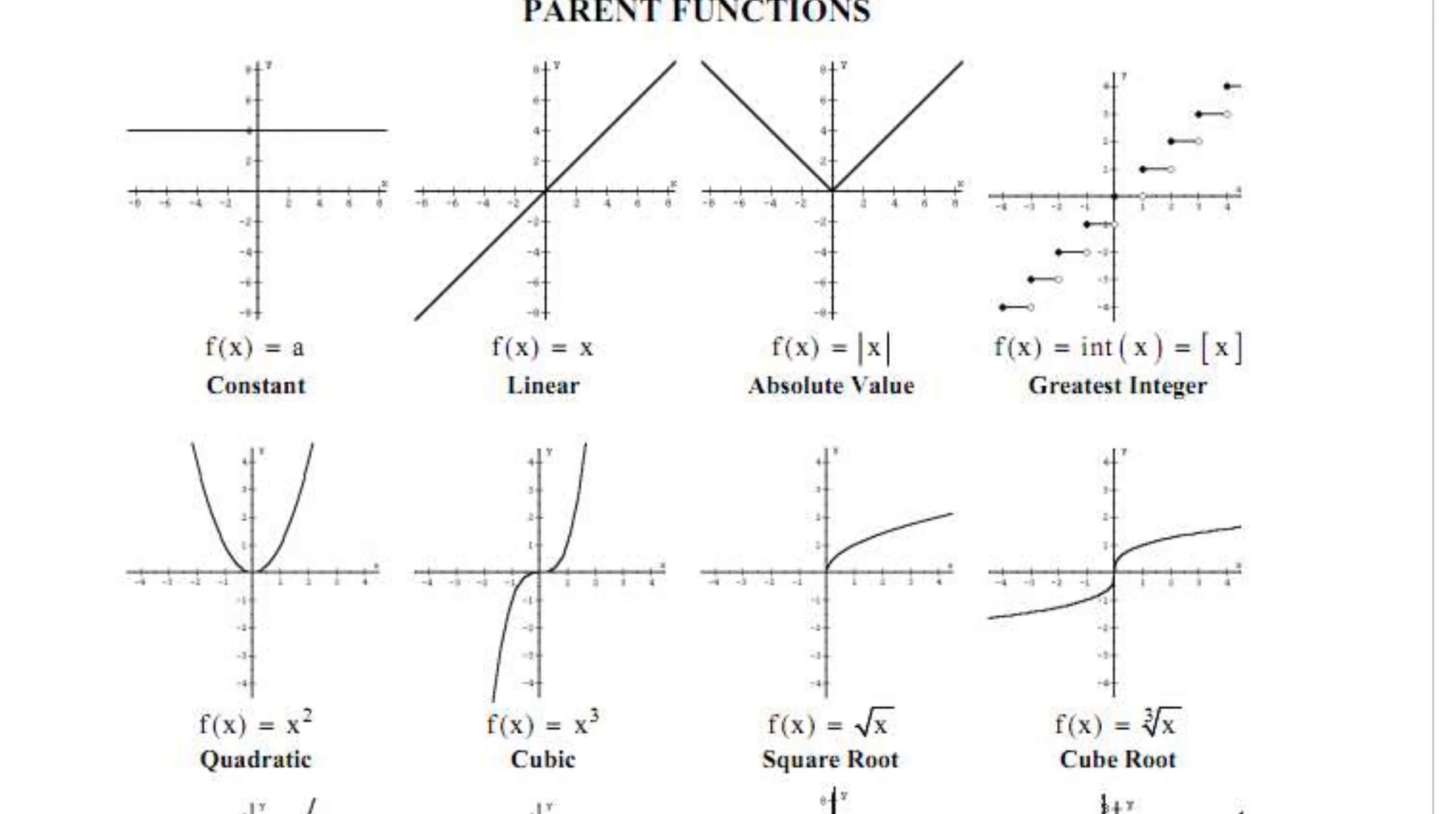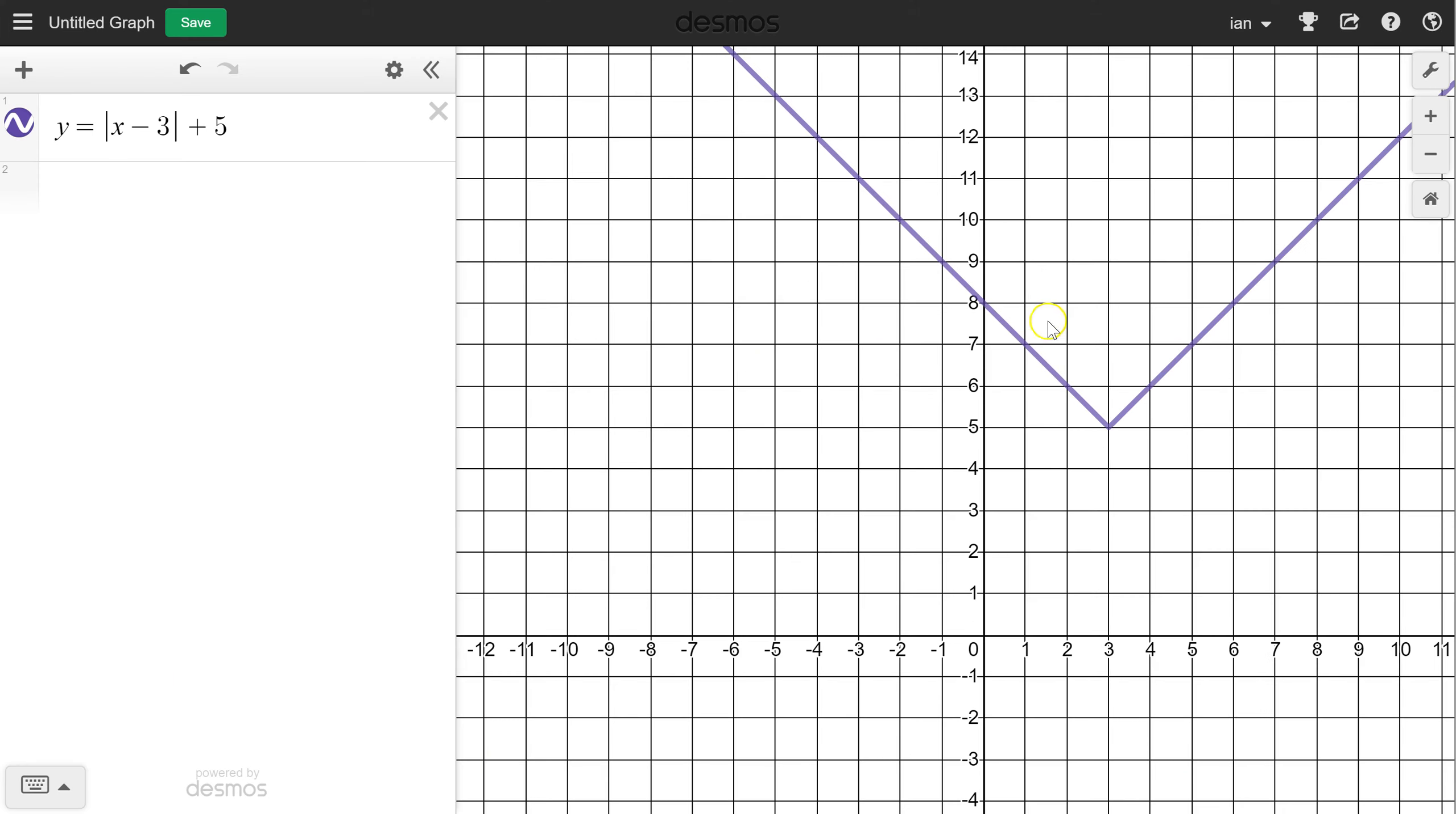So to give you an idea how that looks, here's Desmos. We're going to do an absolute value because it's a nice one. There's the v. So you already see I've taken x minus 3 plus 5, and I've plugged these numbers in. There's our shape.